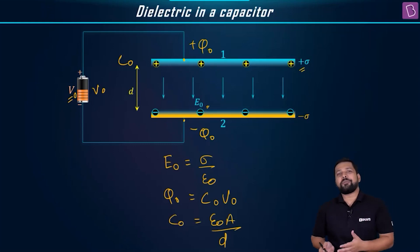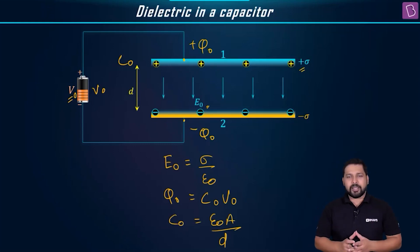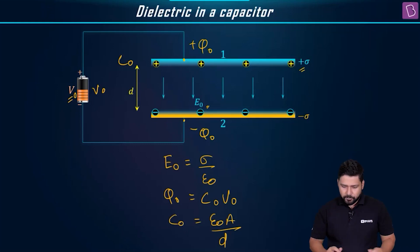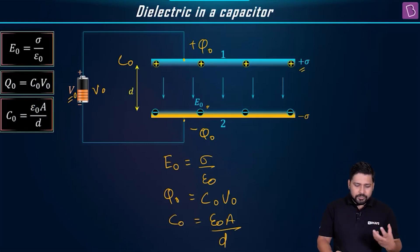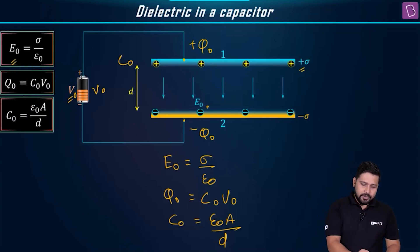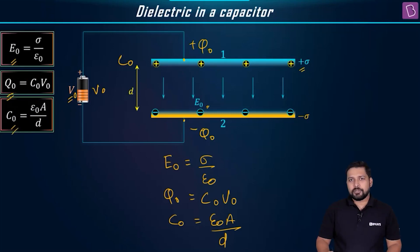Why is C₀ equal to ε₀A/D? Because there is nothing between the plates — it is just an air capacitor. So these are the three things we note initially: the value of electric field E₀, the value of charge Q₀, and the value of capacitance C₀.